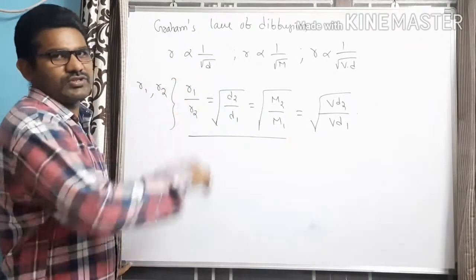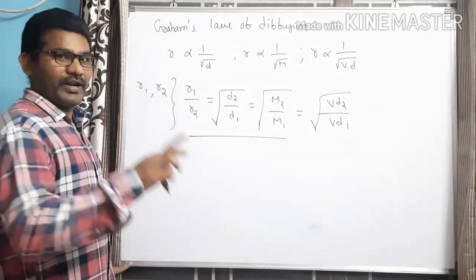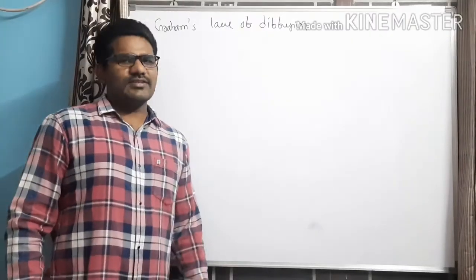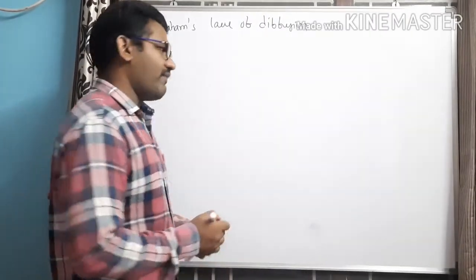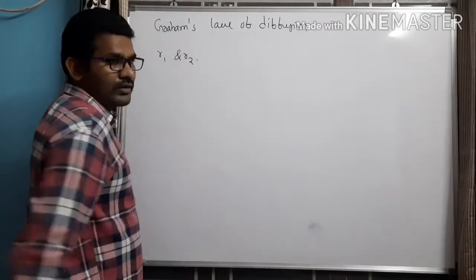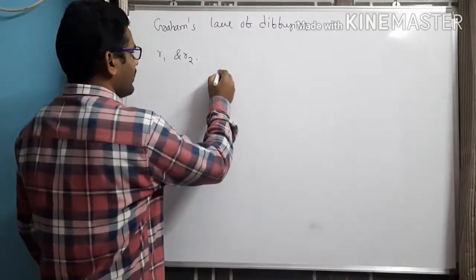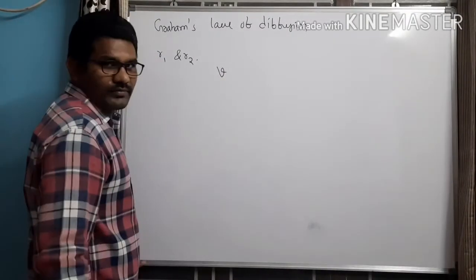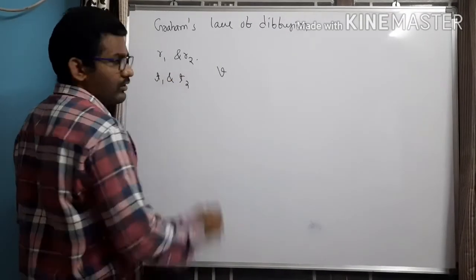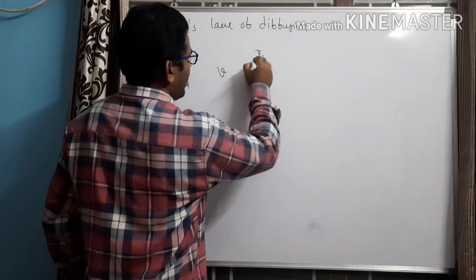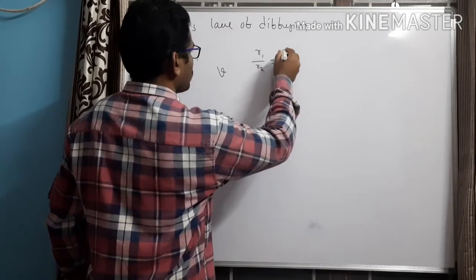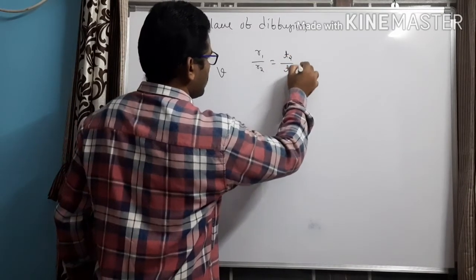Let us consider certain situations where we apply Graham's Law. In Case 1, consider two gases with rate of diffusions R1 and R2 respectively. They are allowed to occupy the same volume V, taking times T1 and T2. Then we can write: R1/R2 = T2/T1.